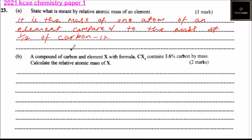Part b: A compound of carbon and element X with formula CX4 contains 3.6% carbon by mass. Calculate the relative atomic mass of X. This is how you go about it: let the relative atomic mass...